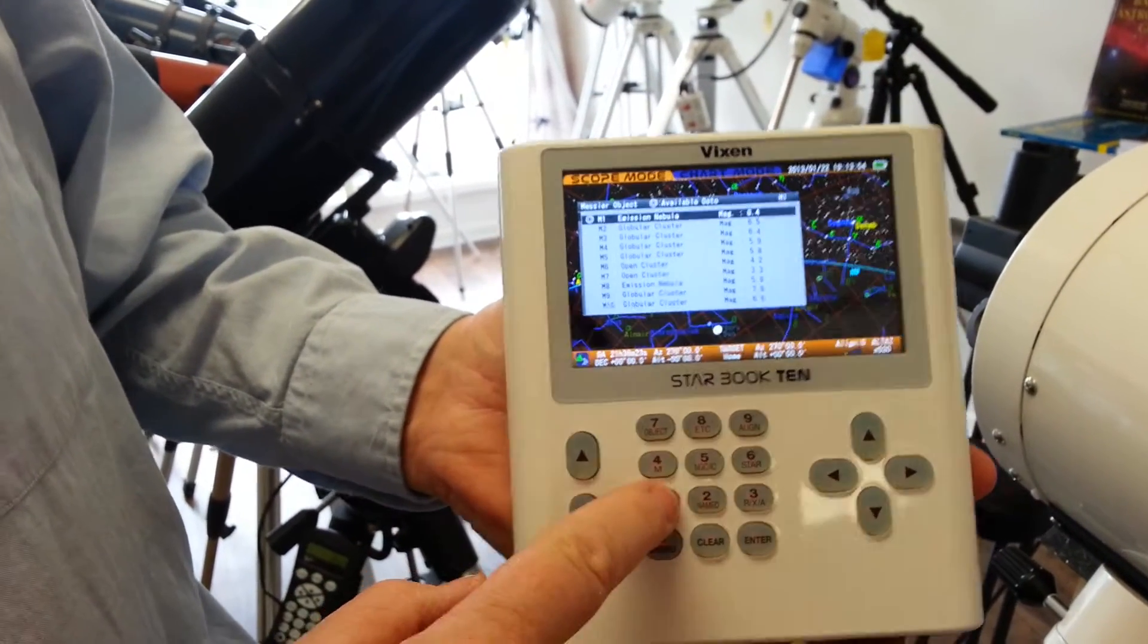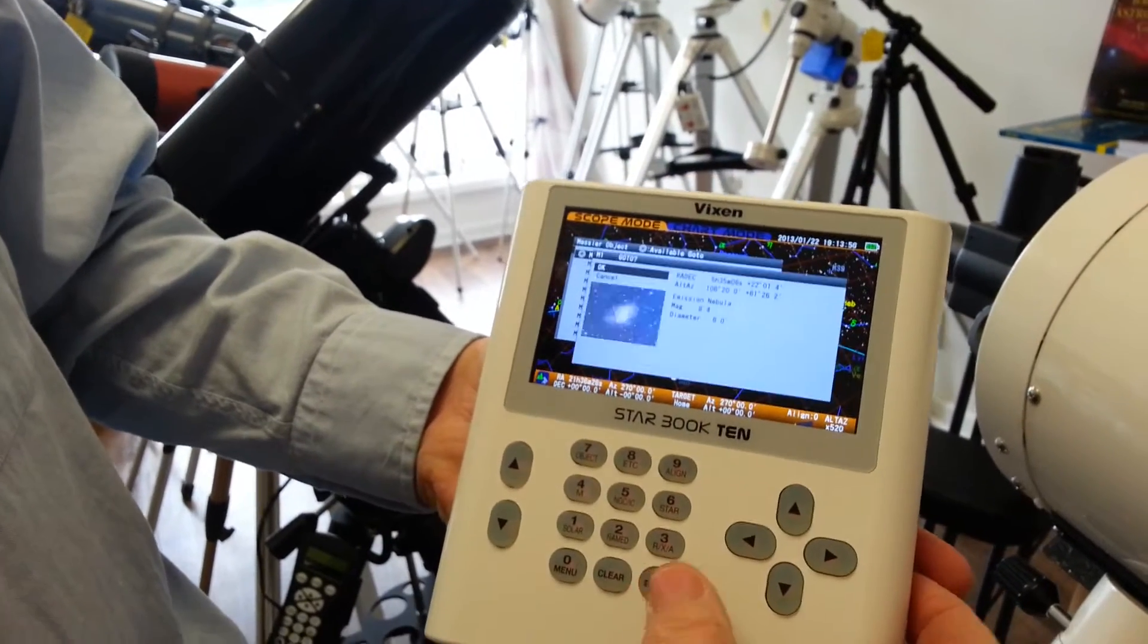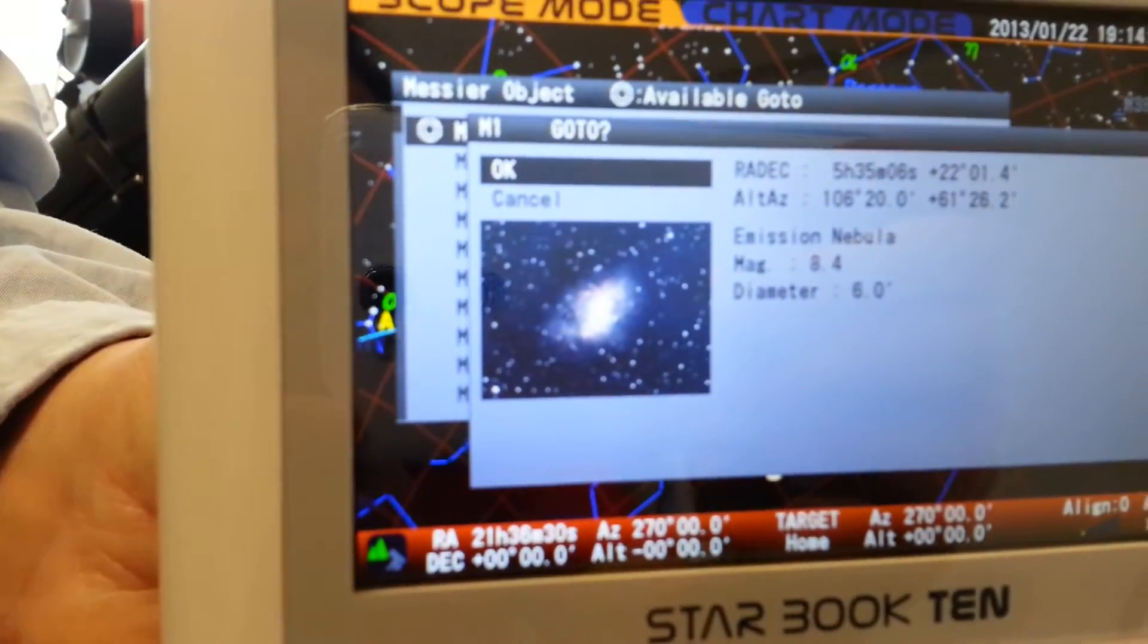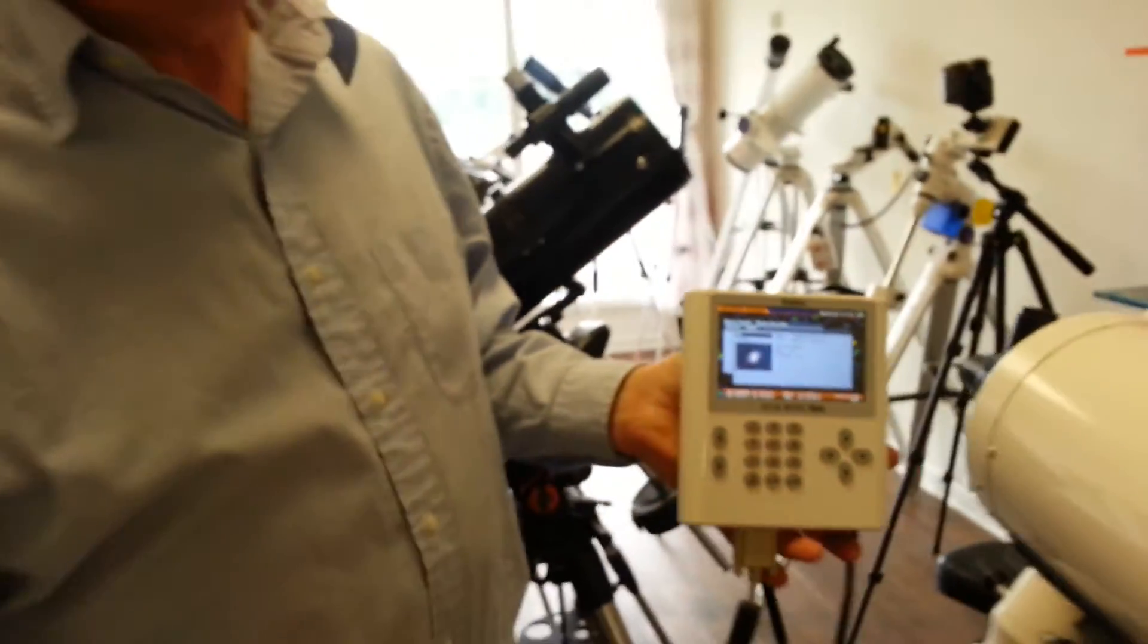To go to M1, where am I here? Before it goes to the object, it shows you what the object should look like either astrophotography or visually.